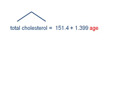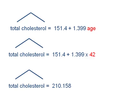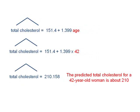Total cholesterol hat is equal to 151.4 plus 1.399 times age. So we're going to plug in 42 for age. We could do this calculation in our calculator, and we're going to get total cholesterol hat is equal to 210.158. That is, our predicted cholesterol for a 42-year-old woman is about 210.